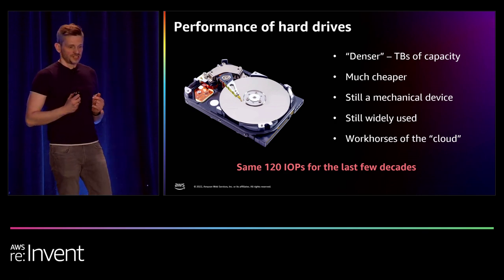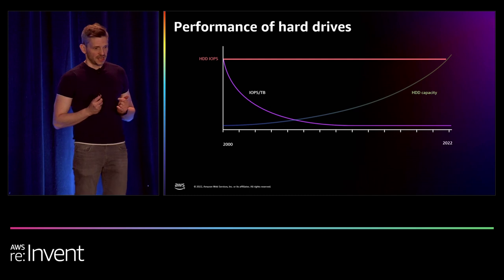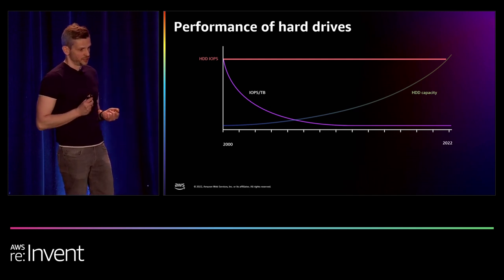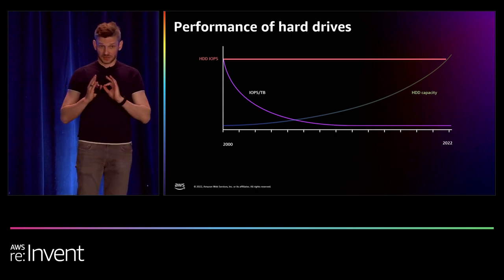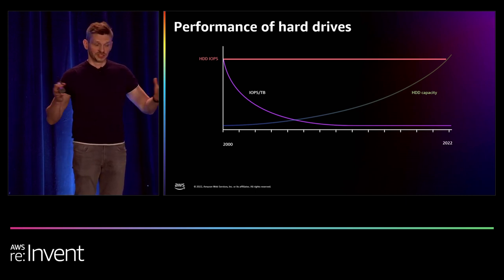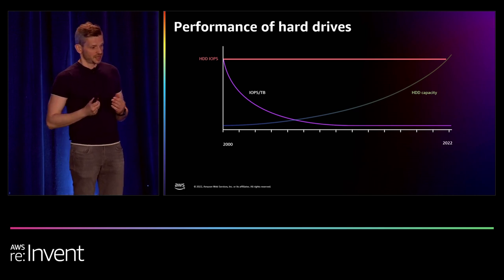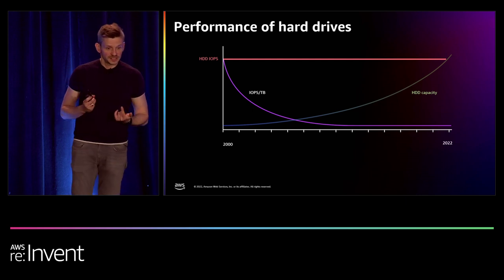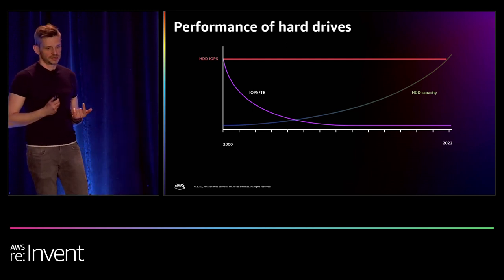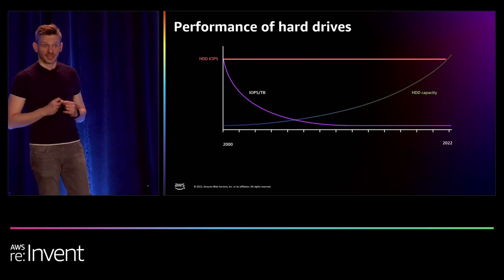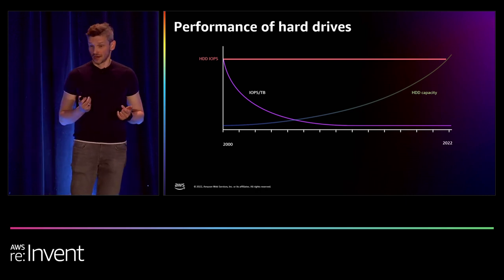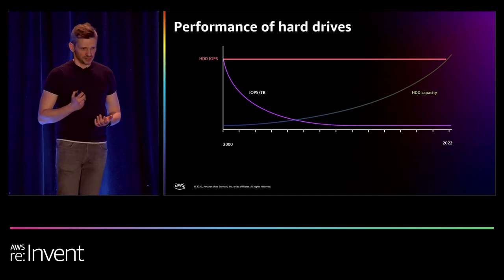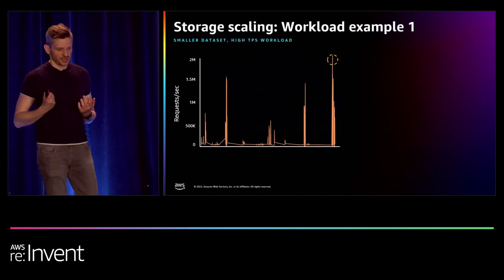What this means is that per terabyte, hard drives are actually slowing down. As capacity is growing, IOPS per terabyte is slowly going down. This is referred to as reduced access density. That has a huge impact on how we — and collectively the world — design storage systems. To demonstrate how we think about it, let's consider two very different workloads.